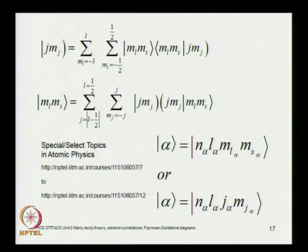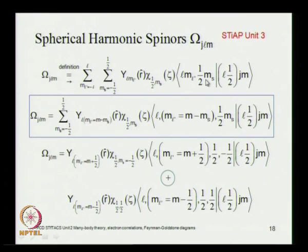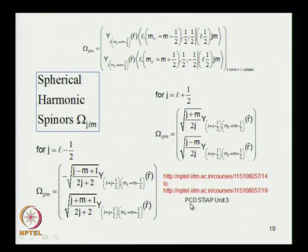In the j mⱼ basis you have spherical harmonic spinors with two rows and one column, and you can write these wave functions in terms of spherical harmonic spinors instead of the mₗ, mₛ basis. Details can be found in unit 3 of the previous course in atomic physics. I want to quickly go over to the many-electron formalism, which really requires us to go in for second quantization methods.